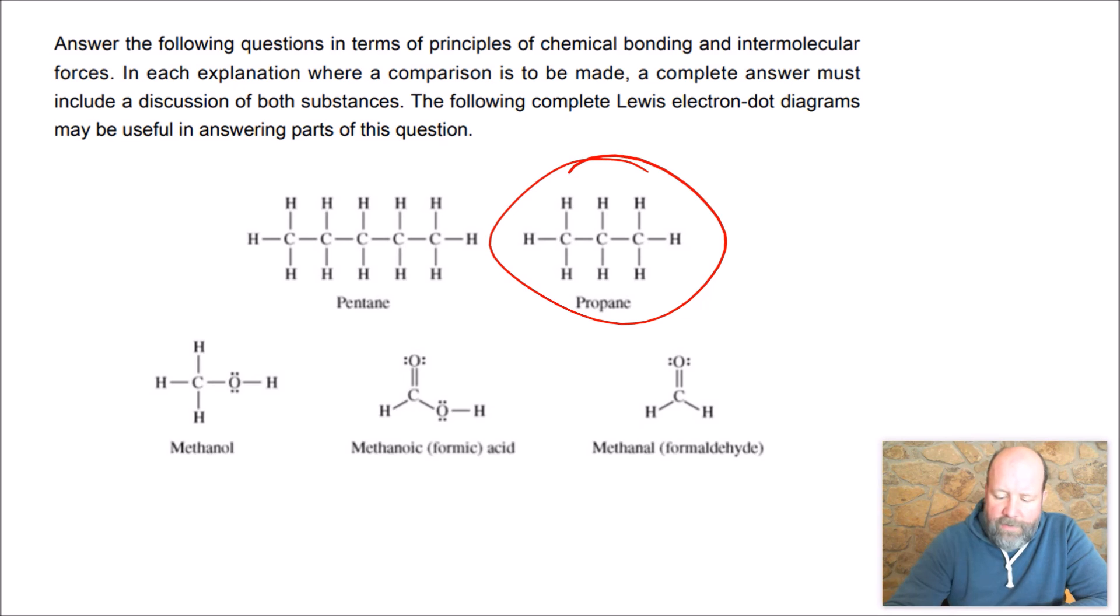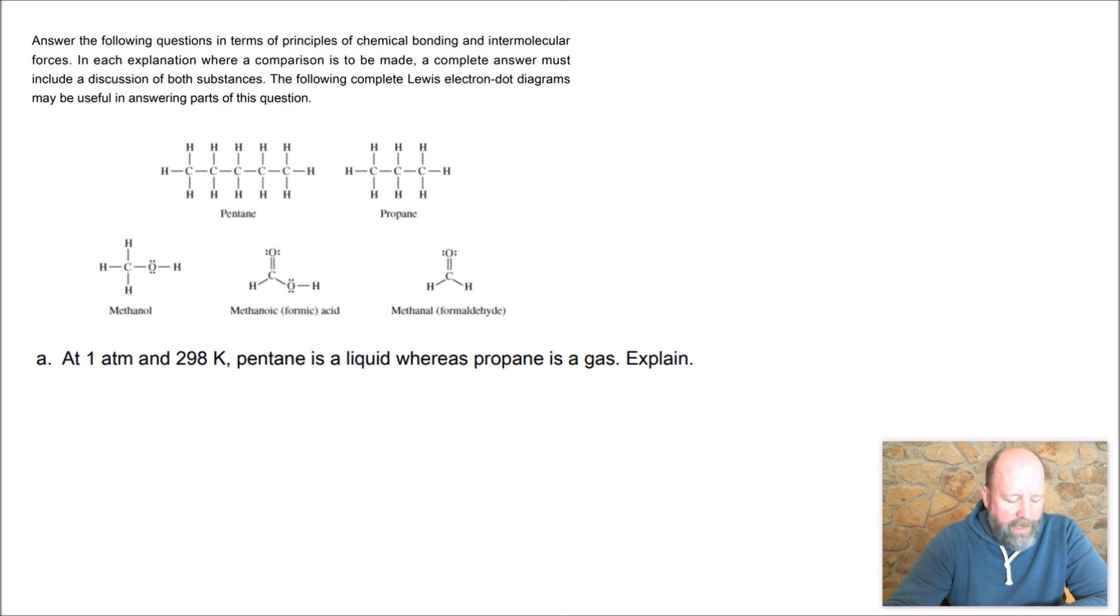The bottom three have some oxygens on them. And so part A asks you why pentane is a liquid and propane is a gas at standard temperature and pressure. So let's look at propane, here's propane, here's pentane. So it looks like pentane is a lot bigger.